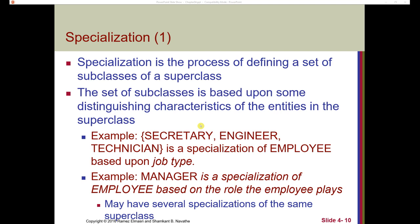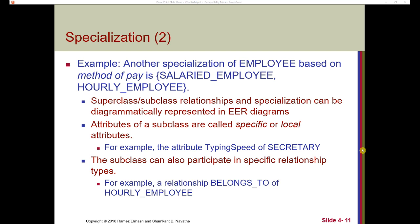Specialization is a process of defining a set of subclasses of a superclass, and the set of those subclasses is based upon some distinguishing characteristics of the entities in the superclass. For example, secretary, engineer, and technician are each a specialization of employee based on job type. Manager is a specialization of employee based on the role the employee plays. Another specialization of employee based on method of pay is salaried employee and hourly employee. These superclass/subclass relationships and specialization can be diagrammatically represented in enhanced ER diagrams.